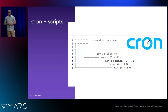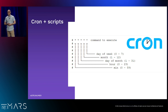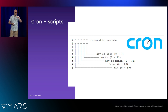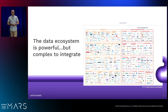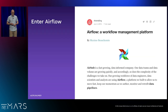Traditionally, data pipelines were done with a bunch of random scripts running in cron jobs, or business analysts just hitting refresh on a report or running a SQL query on their laptop — pretty primitive. It's not just the complexity of scheduling. Some people have described Airflow as scheduling on steroids, but it's much more than that. You've got a huge ecosystem of technologies that have to be integrated together, and data scientists tend to use whatever technology they want — standards be damned.